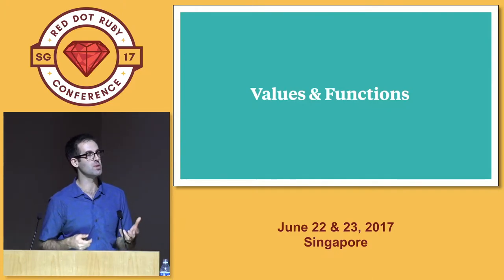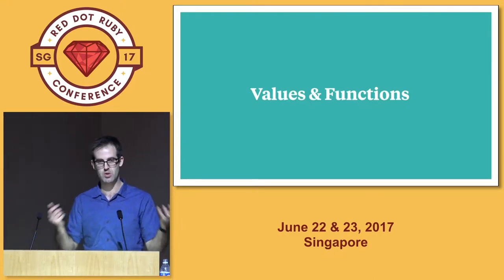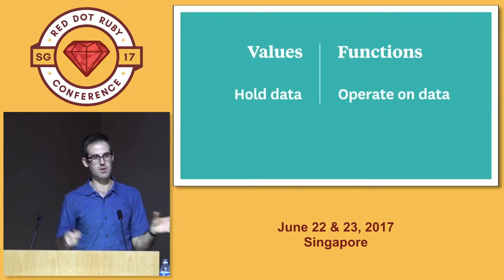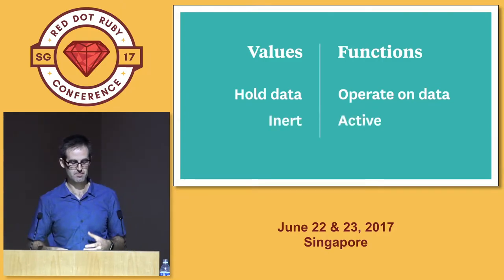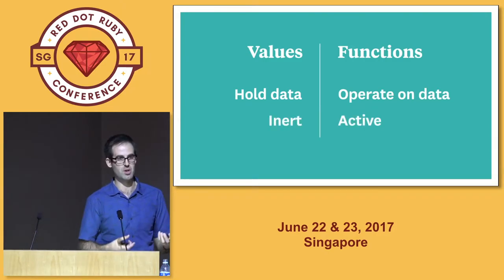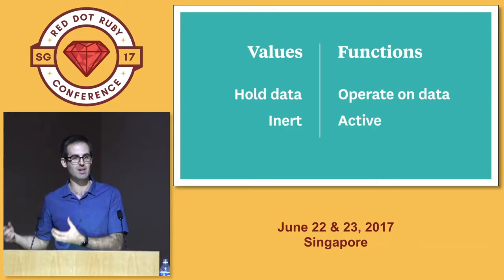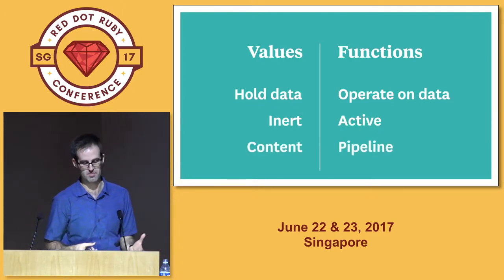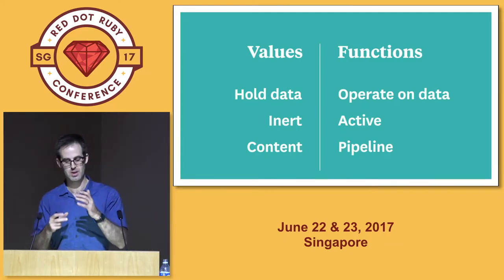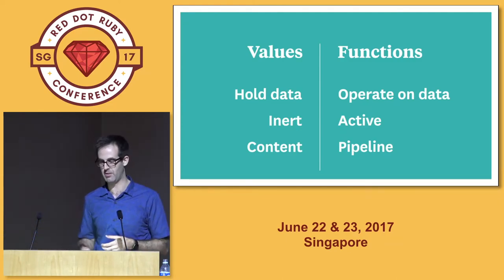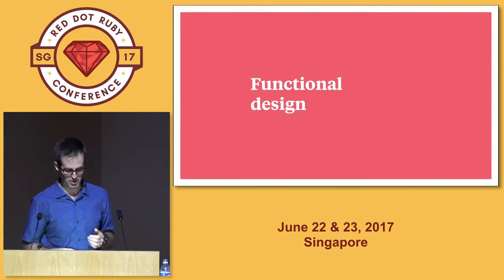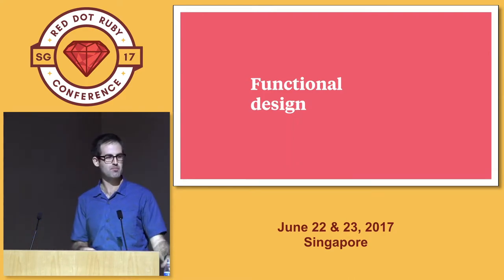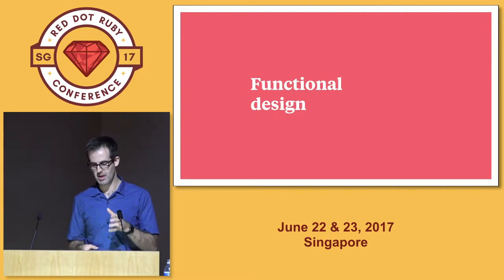In a Ruby app built with this style, objects tend to break down into two different things: values and functions. Our values hold data, and those functions operate on the data. Our values are inert — they're passive. The functions are active: they go to work on those values. If the values are the content in our system, the functions form the pipeline through which the content flows in order for us to achieve some kind of outcome.